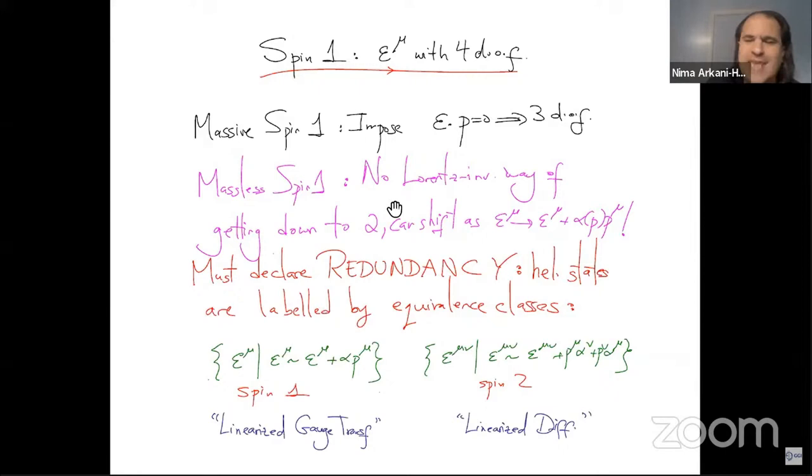But if I've massless spin one, I just can't do that. There are simply no Lorentz invariant way of getting down to the two degrees of freedom associated with a massless spin one particle. And if you make some arbitrary choice for how to label the two polarizations for the massless spin one particle, if you do a Lorentz transformation that leaves a momentum invariant, you'll see that you won't come back to the same form of the polarization vector. And it will instead shift by something proportional to the momentum itself. Therefore, if we want to use a strategy of using local quantum fields to describe the interactions of these particles, we have to introduce a new idea. We have to declare a redundancy that holistic states are labeled by equivalent classes of polarization vectors that are shifted proportional to the momentum.